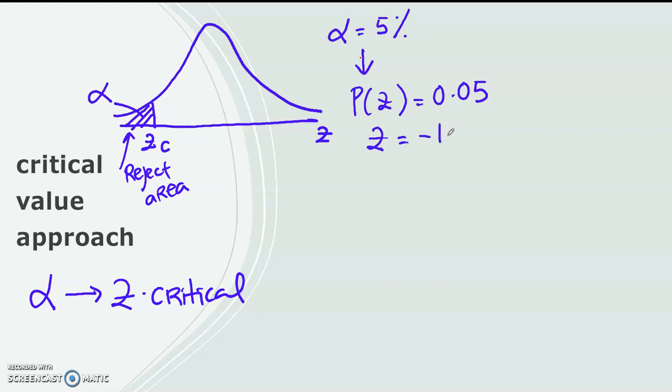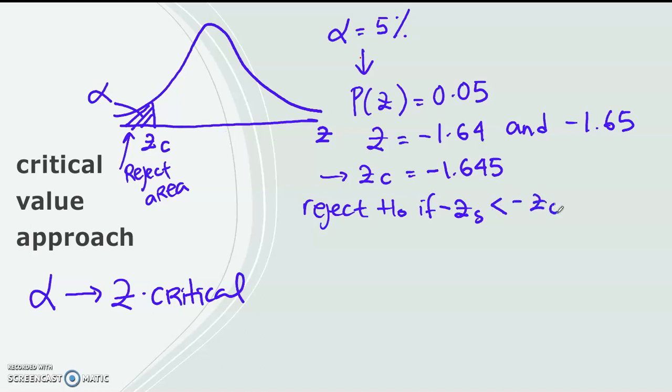You will get z equals to between minus 1.64 and minus 1.65 to get 0.05. So we will determine the z-critical to be minus 1.645 with alpha equals to 5%. Based on this result, the rejection would be reject if z statistic is smaller, and it's negative because it's in the left side, smaller than the minus z-critical. Why?